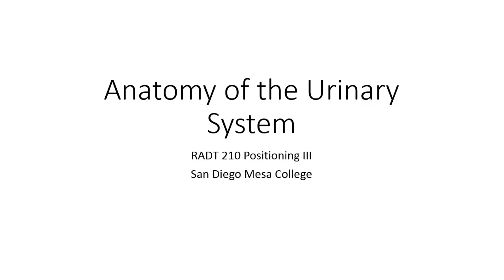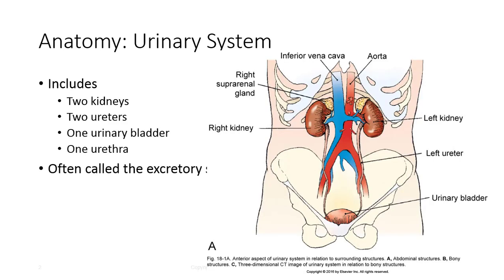In this presentation, we're going to take a look at the anatomy of the urinary system before diving into discussions about radiographic procedures and contrast media. The urinary system includes two kidneys, two ureters, one urinary bladder, and one urethra, and is often referred to as the excretory system.